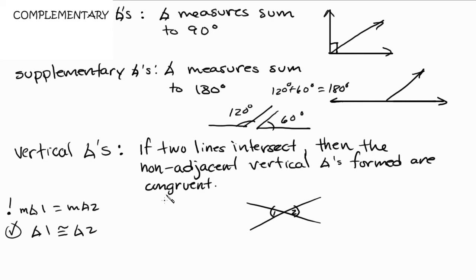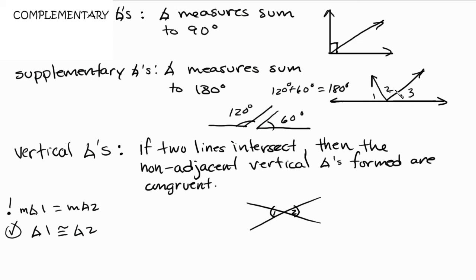One more thing about complementary and supplementary angles: someone once asked whether a third angle could be included. For example, with complementary angles, if you had angle one, angle two, and angle three — are those complementary? The answer is no. Complementary is assigned to two angles whose sum equals 90 degrees. The same applies to supplementary angles — it must be just two angles, not three.